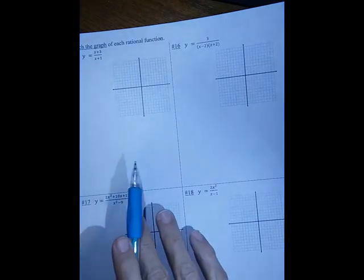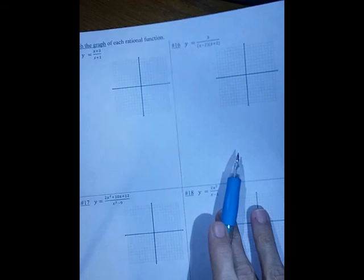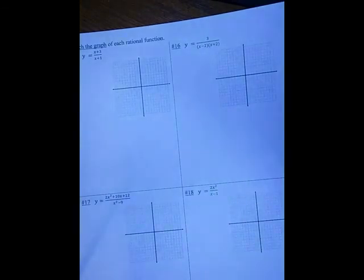In the first one, I will tell you there is one horizontal and one vertical asymptote. In the second one, there's one horizontal but two vertical. In the third one, there's one horizontal and one vertical.